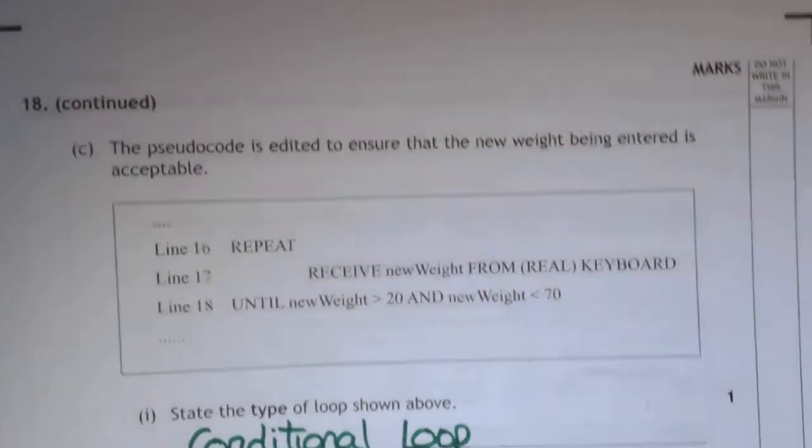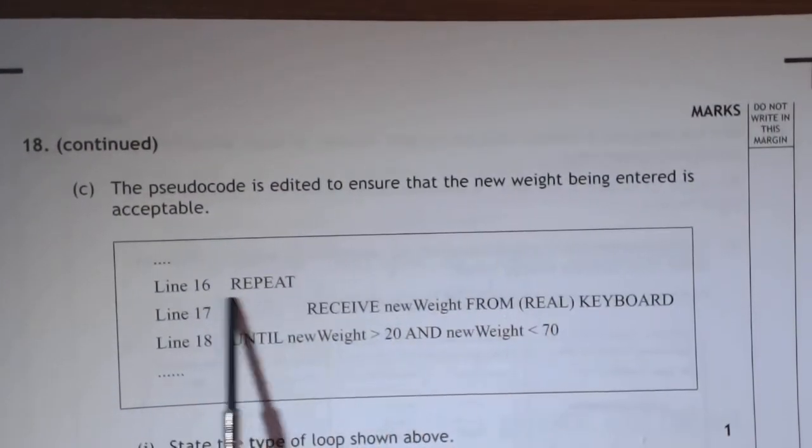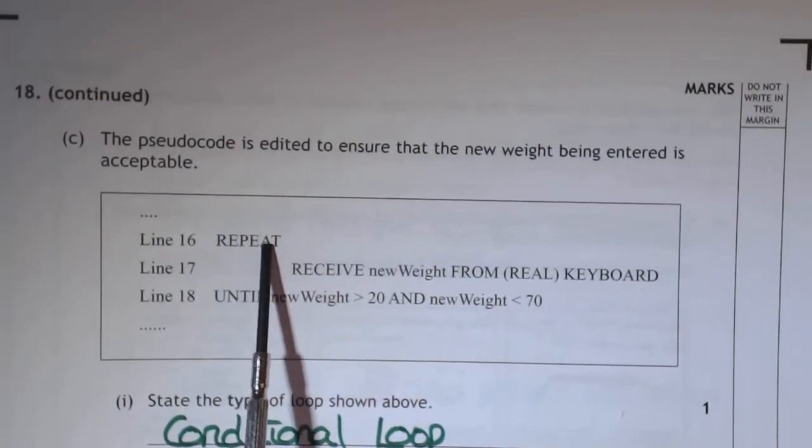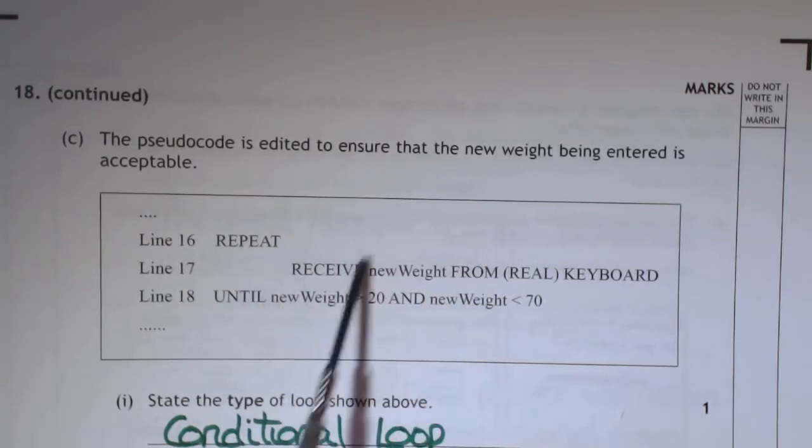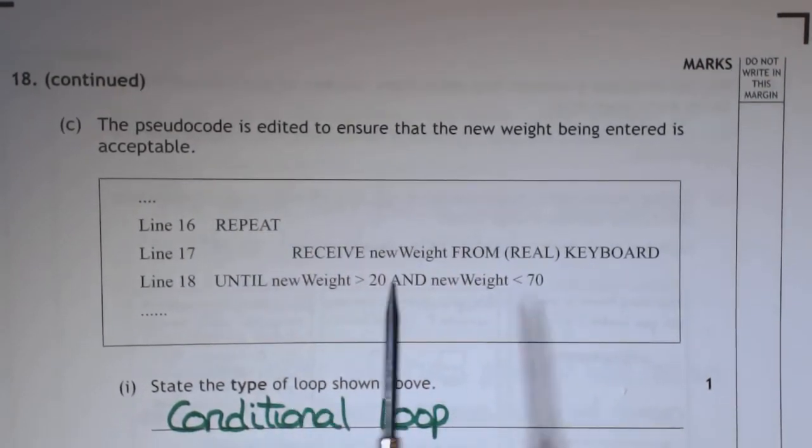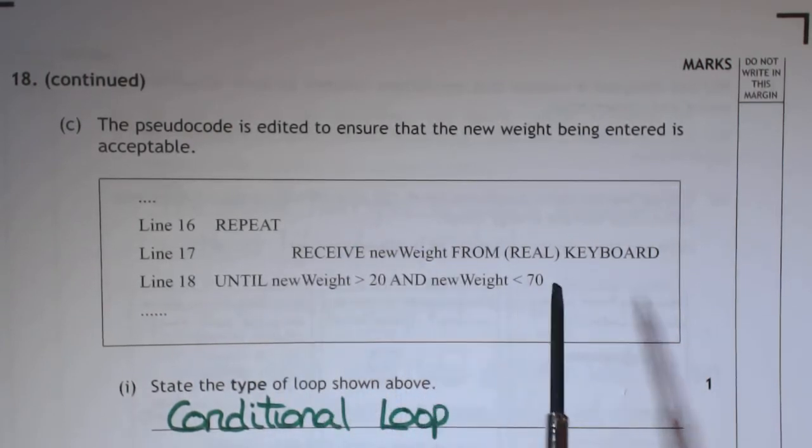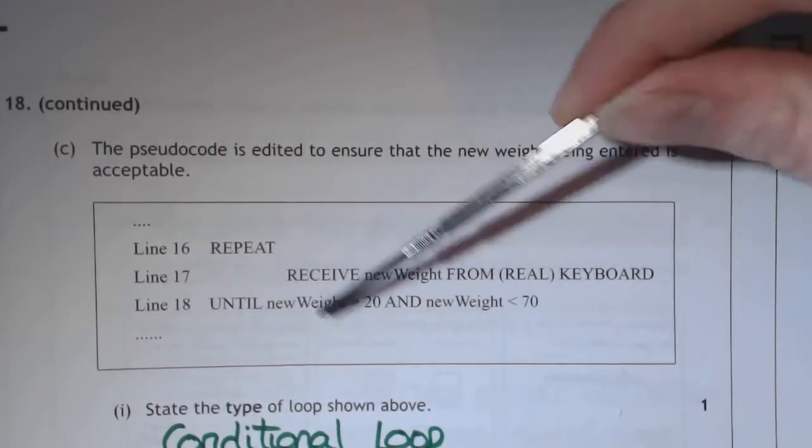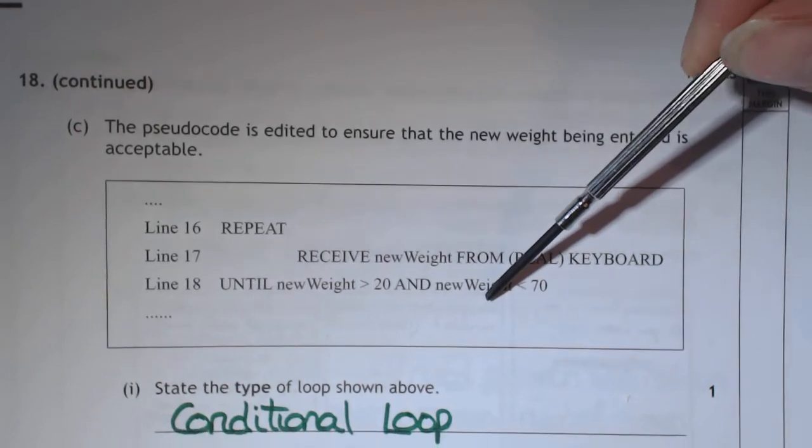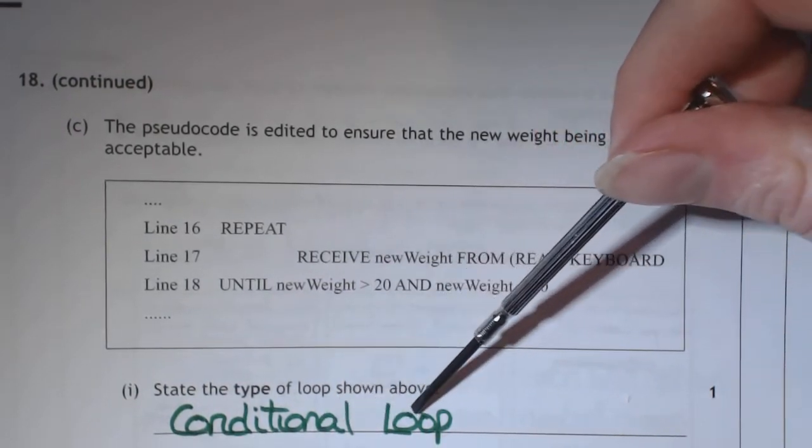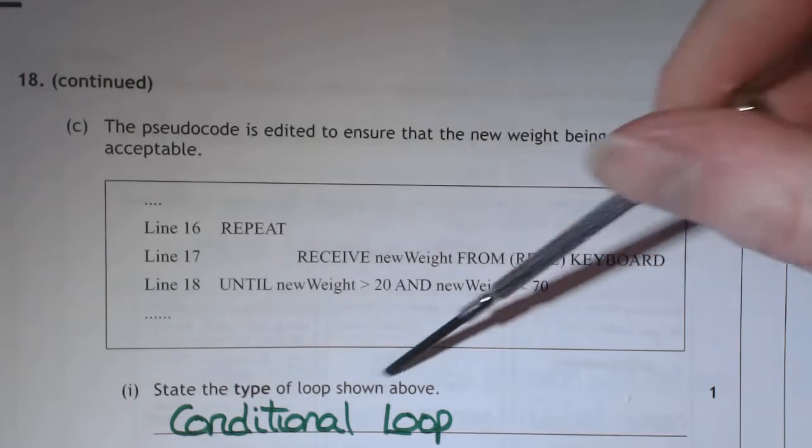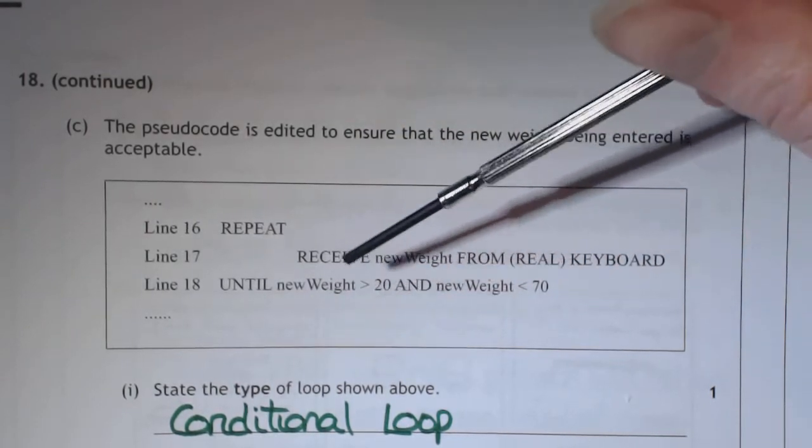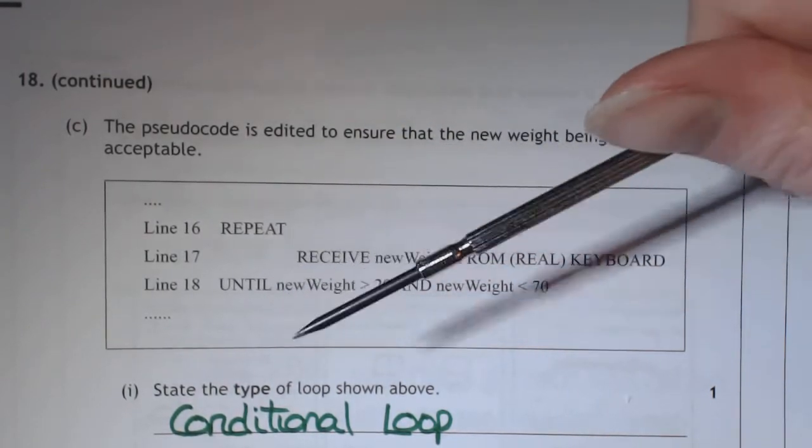Now another piece of pseudocode. This is basically saying you're going to repeat the following actions, so you're going to ask for the new weight from the keyboard and keep on asking until what you've entered is greater than 20 and it's less than 70. So it keeps on going around in a loop until this condition has been satisfied, and that's why you call it a conditional loop. So it asks you for a value that keeps going around and around until the value that it's wanting has been entered.